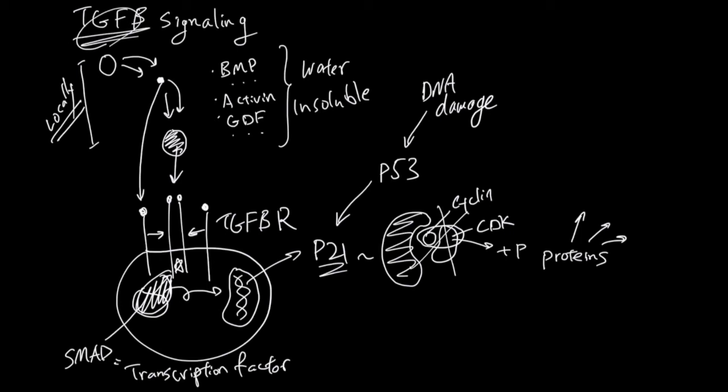So overall, the TGF-beta family ligands act on many cells locally because the ligands are not that soluble. These receiving cells have TGF-beta receptors. With activated TGF-beta receptors and dimerization, SMAD gets activated.